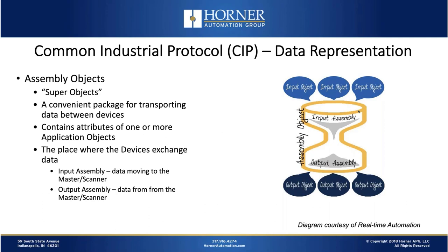Let's talk about a special type of object called assembly objects — these are really super objects. An assembly object is a convenient package for transporting data between devices. It contains multiple attributes from typically more than one application object, and it's really the place where devices exchange data. For instance, an assembly object will likely contain an input assembly with a collection of input objects, and an output assembly that's a collection of output objects. If an OCS is communicating with a third-party PLC over a CIP-based protocol, you're going to be exchanging data through assembly objects including input and output assemblies.